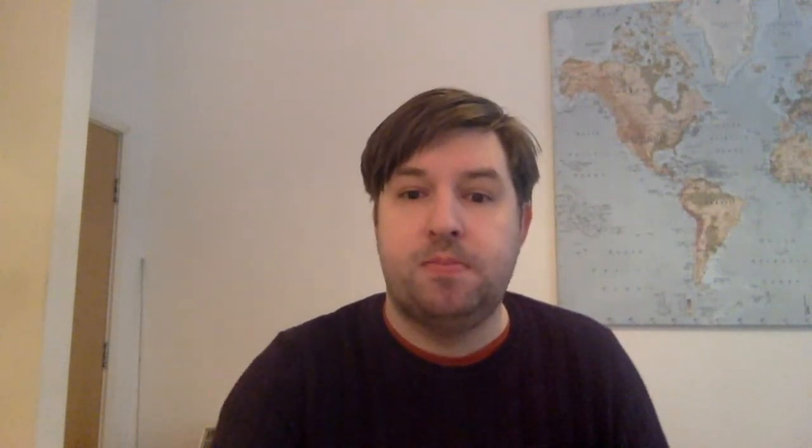The simplest example we could start with is a Markov chain that just has two states, which we'll call 0 and 1. So here's our example, where we have two states, which I'm calling 0 and 1.